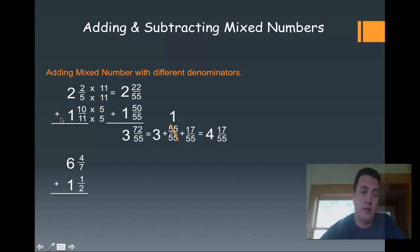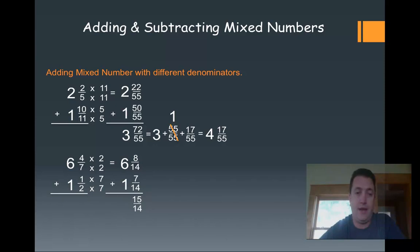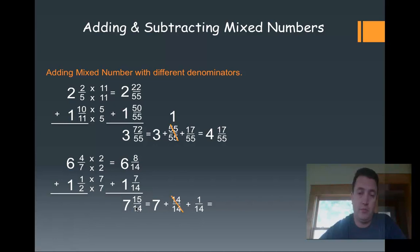Now let's look at another one. I've got 6 and 4 sevenths plus 1 and 1 half. I'm going to multiply 7 times 2, making my common denominator 14. So I've got 6 and 8 fourteenths plus 1 and 7 fourteenths. When I add 8 and 7, I get 15 fourteenths, and the whole numbers give me 7. I've got that fraction greater than 1 again, so I'll convert. Crossing out the one whole there, I end up with 8 and 1 fourteenth, and that is in lowest terms so I don't need to do anything further.